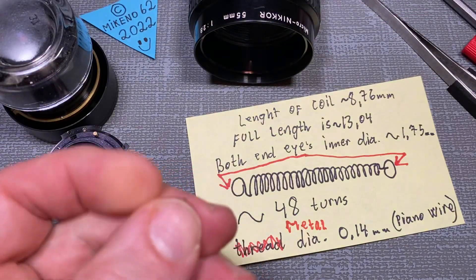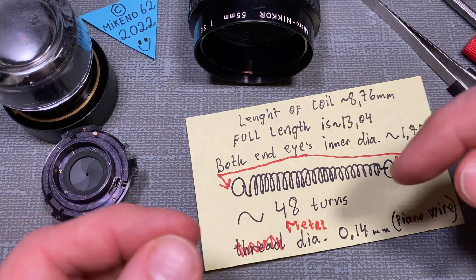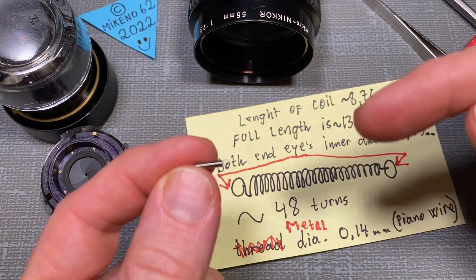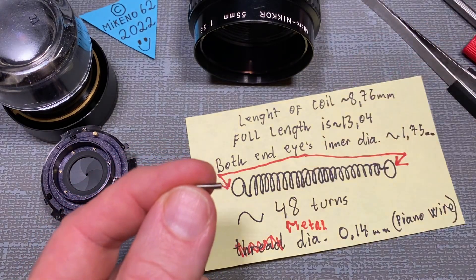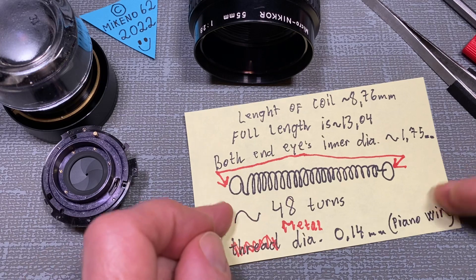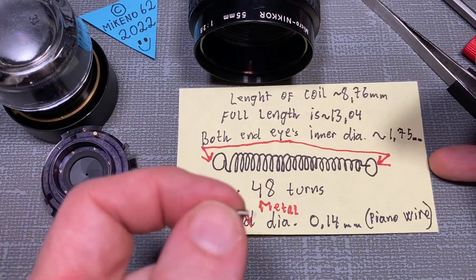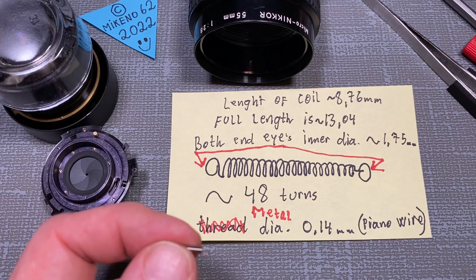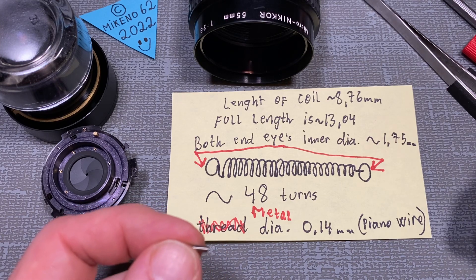The other dimension is how many turns is the spring actually made of, how much wound is it. It's something like 48 turns. It could be 49 or 47 but it doesn't really matter that much.